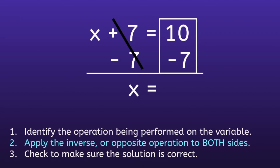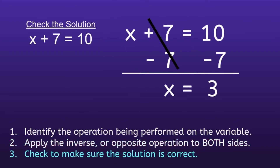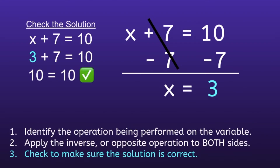On the right side, we have 10 minus 7, and 10 minus 7 is equal to 3. Now we have a solution of X equals 3. But it's very important to check our solution. We do that by writing the equation: X plus 7 is equal to 10. Then we substitute in the value of X, replacing X with 3. We get 3 plus 7 is equal to 10 — and 3 plus 7 is indeed equal to 10. Since both sides are equal, our solution is correct: X equals 3.